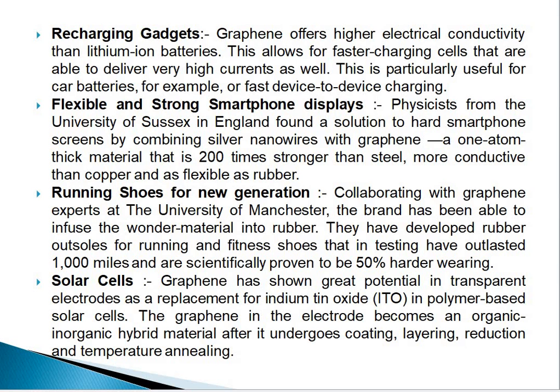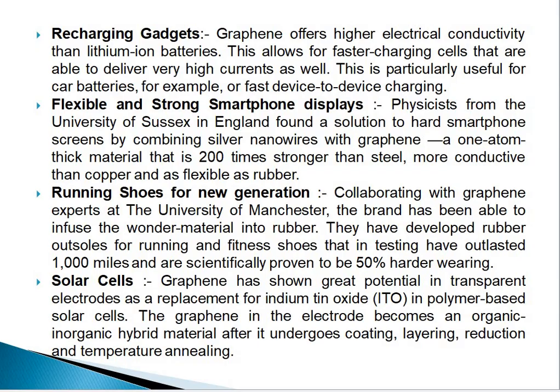Graphene is used in flexible and stronger smartphone displays. The next advantage is running shoes for the new generation: collaborating with graphene experts at the University of Manchester, a brand has been able to infuse the wonder material into rubber. They have developed a rubber outsole for running and fitness shoes that testing has shown outlasts 1000 miles and is scientifically proven to be 50% harder-wearing. The next advantage is solar cells: graphene has shown great potential as a transparent electrode replacement for indium tin oxide in polymer-based solar cells. After coating, layering, reduction, and temperature annealing, it is best suited for solar cells.